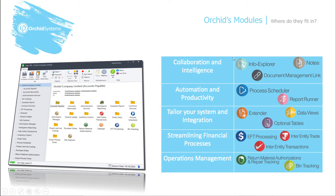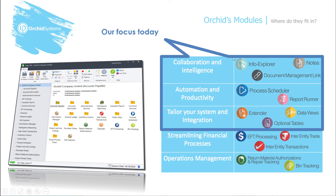So today, our key focus will be on those first three categories: collaboration and intelligence, automation and productivity, and tailoring your system. You'll see how a combination of all these modules can be used to very effectively tailor Sage 300.